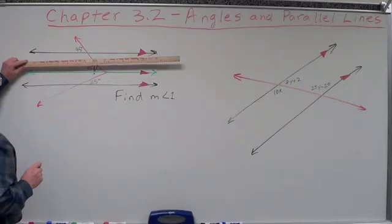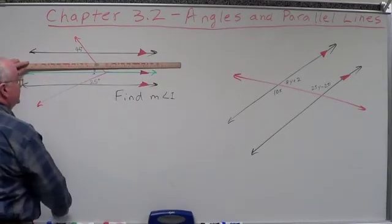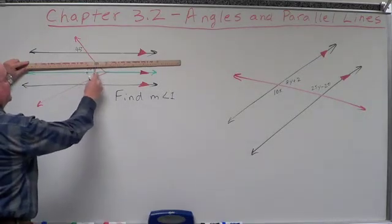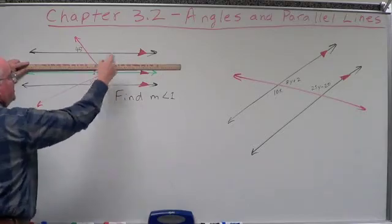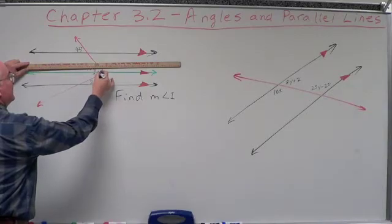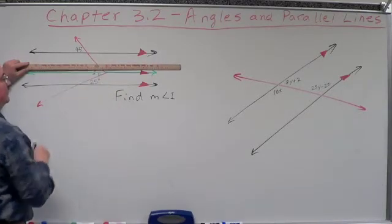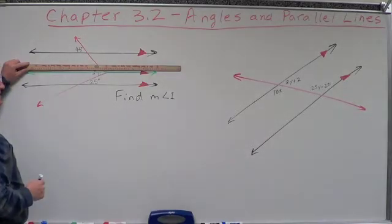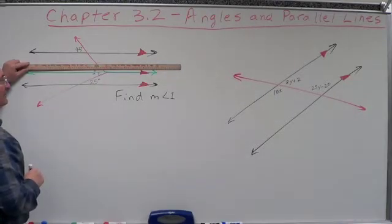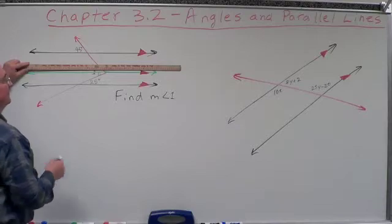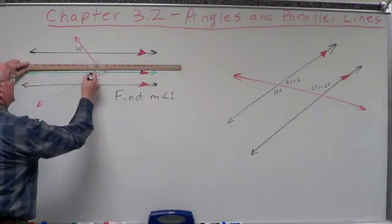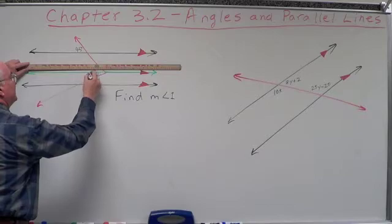Now let's look at the bottom set. We've got this angle here and this angle inside here. We have two parallel lines cut by a transversal. What is the relationship of this angle and this angle? They're on opposite sides, non-adjacent, on the inside — they are alternate interior angles. Alternate interior angles are congruent, so this angle right here is 25 degrees.